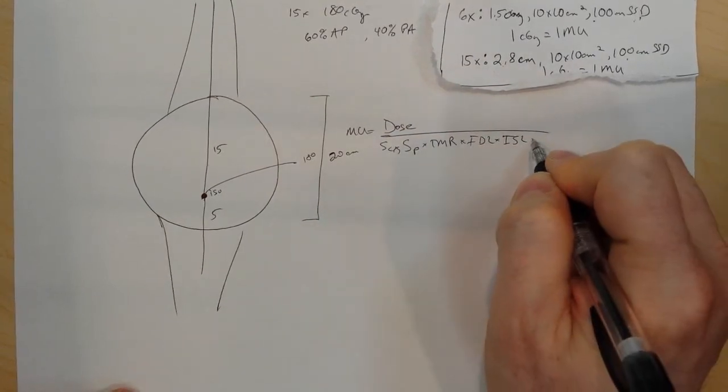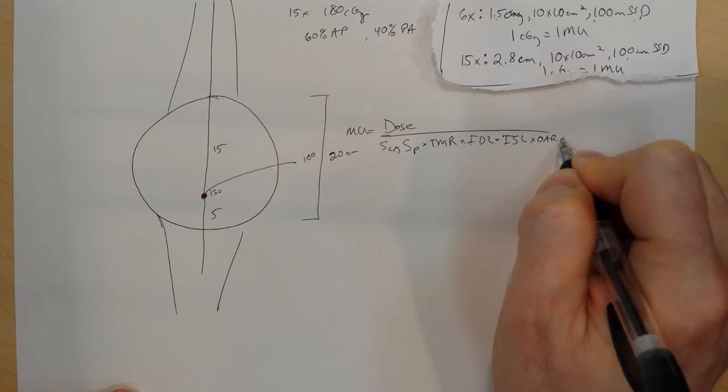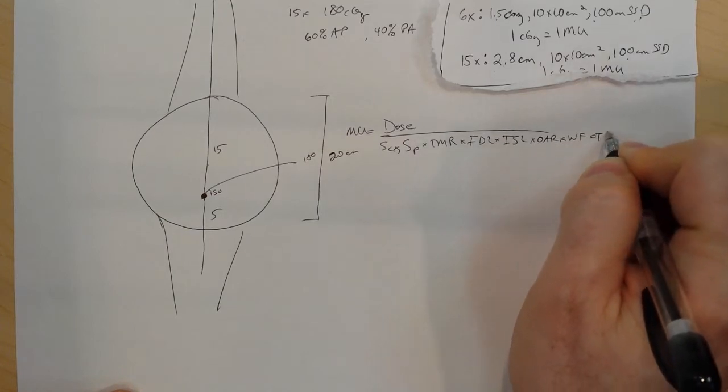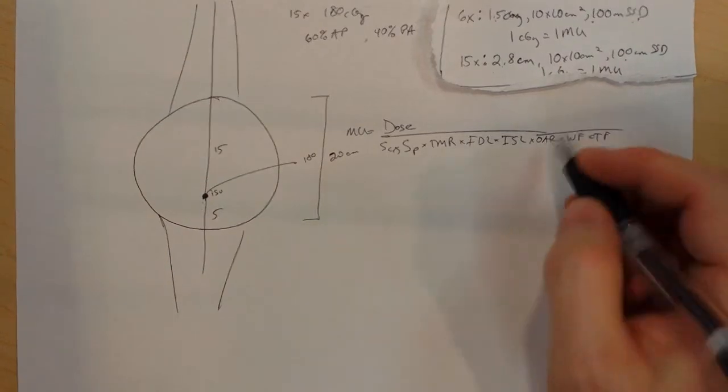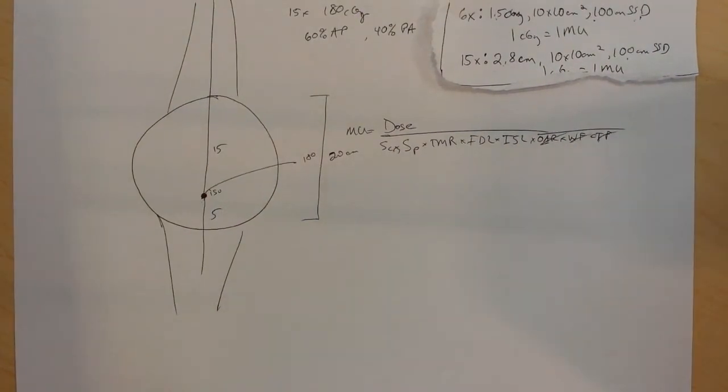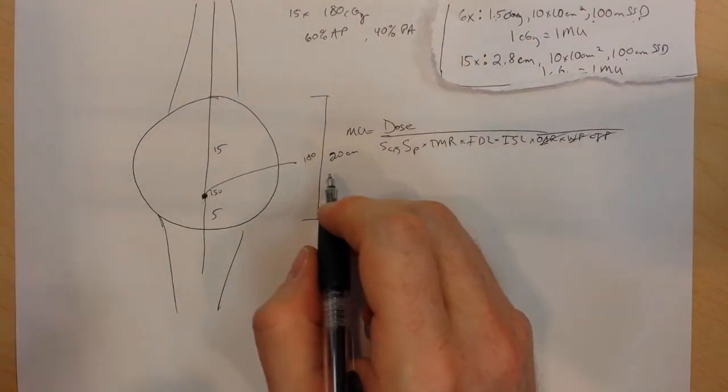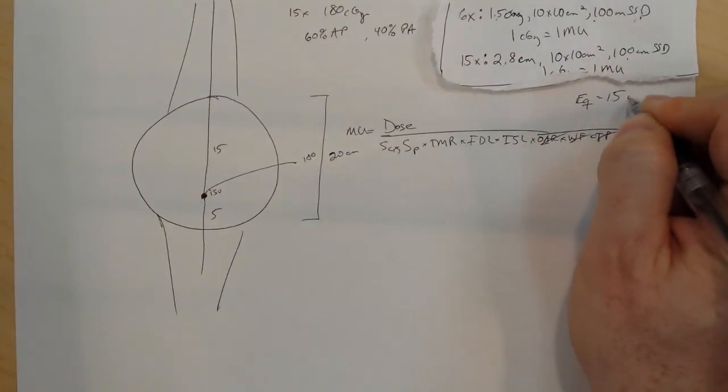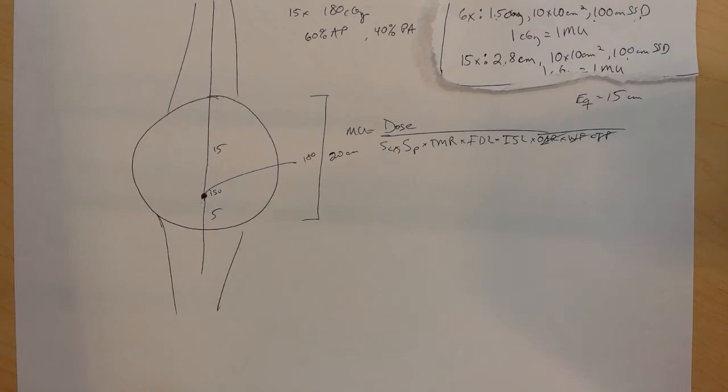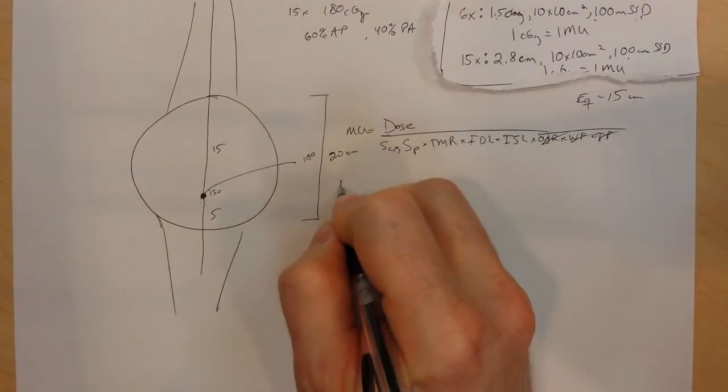Inverse square law, off-axis ratio, wedge factor - these are all the traditional ones that we have. Prescribing to the isocenter so we can toss OAR out. We don't have any wedges, we don't have any trays. So let's say I have an equivalent square field size of 15 centimeters. Let's work this out.